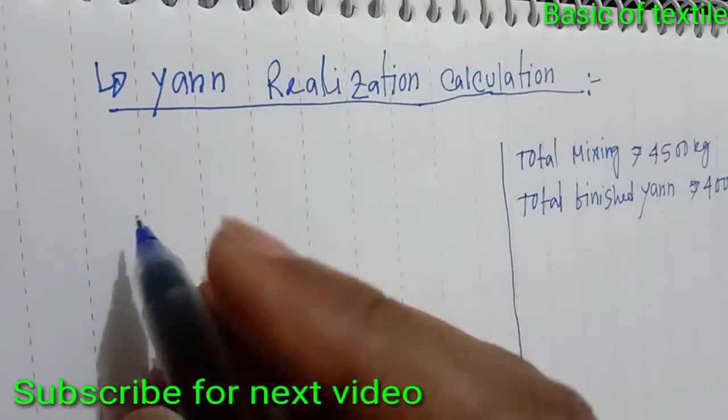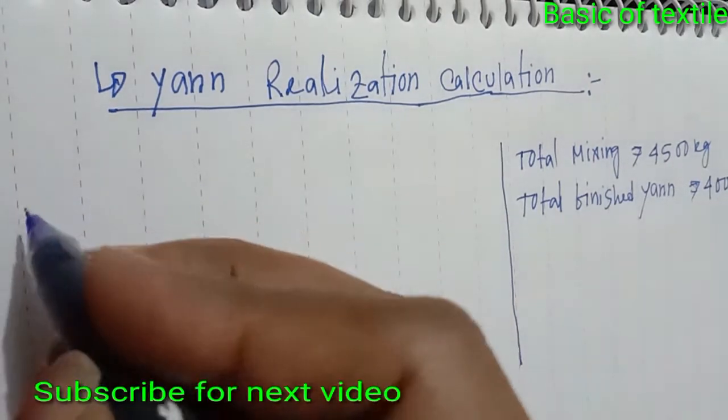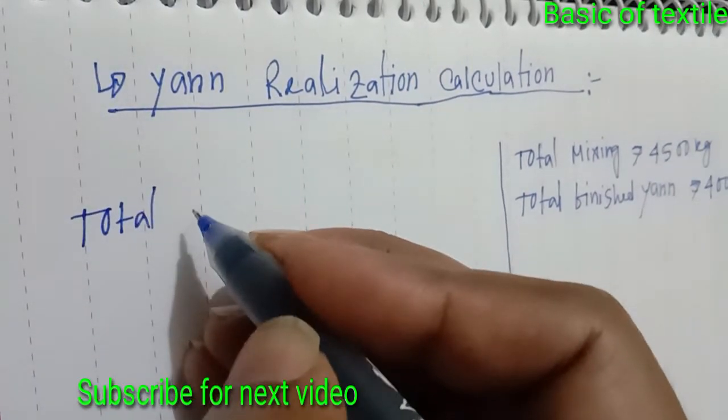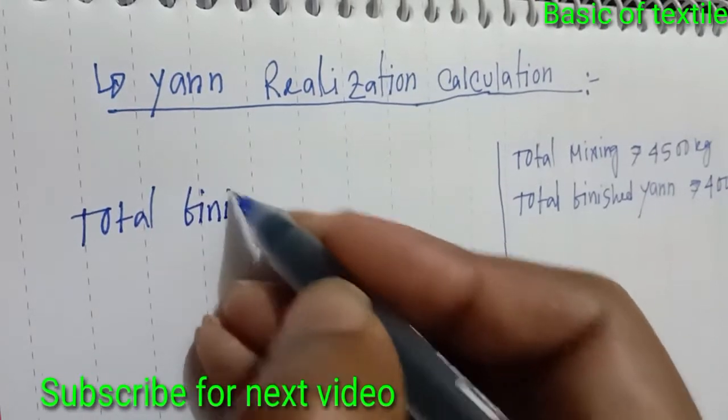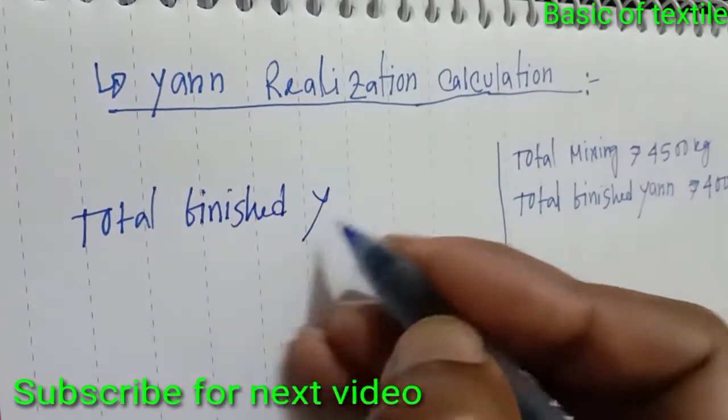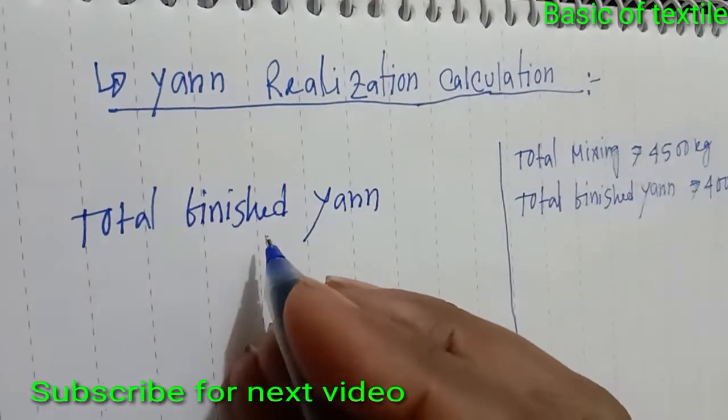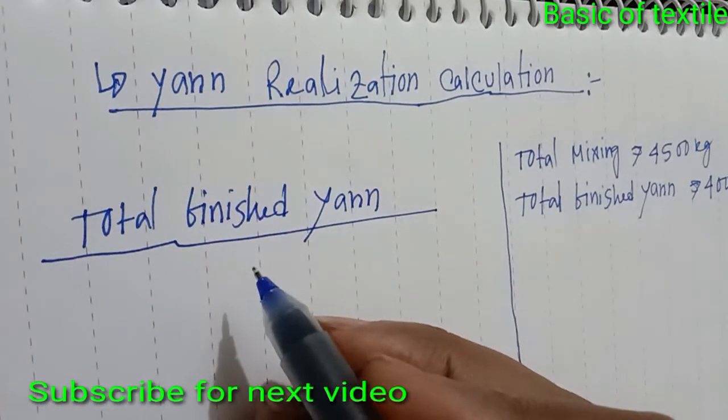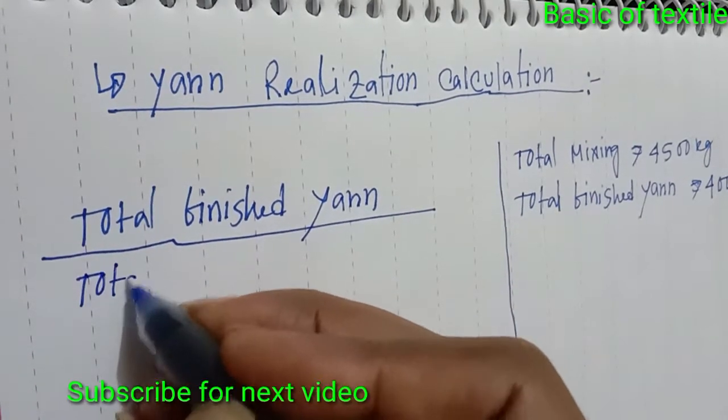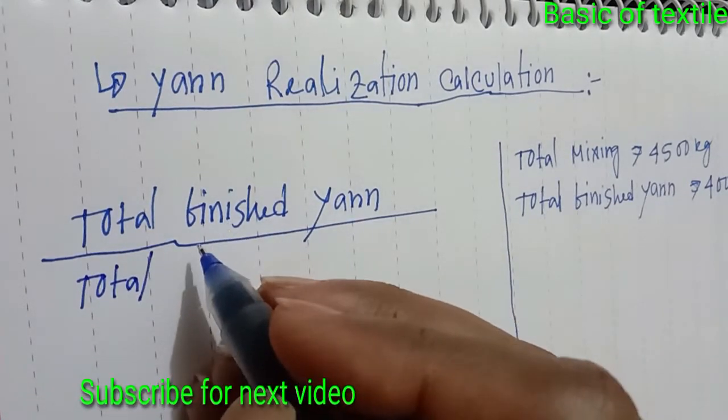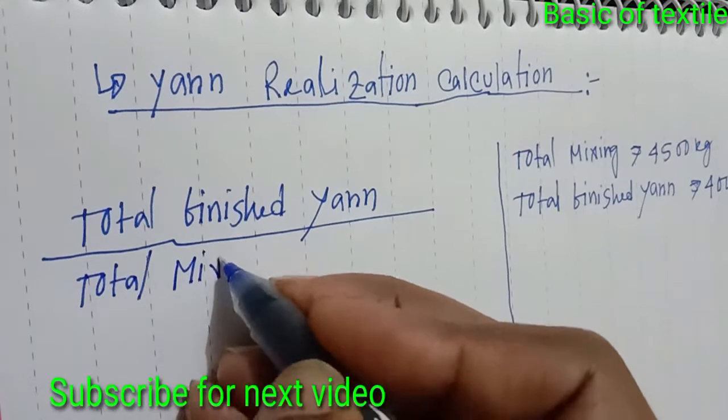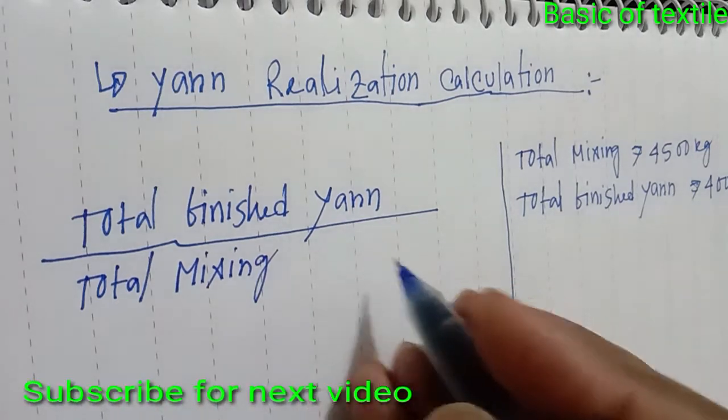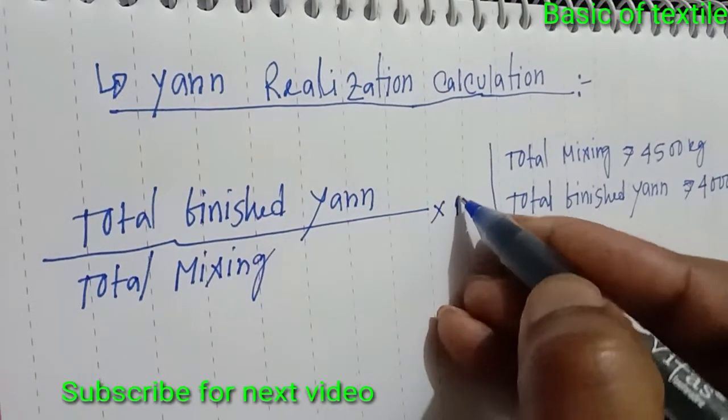Now for the calculation: total finished yarn divided by total mixing, multiplied by 100.